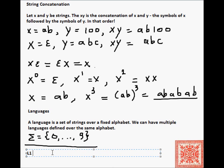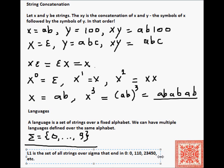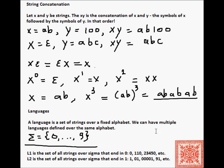There are multiple languages that can be defined over, for example, sigma equal to 0 through 9. Here are a couple of examples. Let's say we have this alphabet consisting of digit symbols in the decimal system. L1 is the set of all strings over sigma that end in zero: 0, 110, 2350, and so forth. Then we can have another language, L2, which is the set of all strings over sigma that end in one: 1, 01, 0001, 91, etc. Those are two different languages.